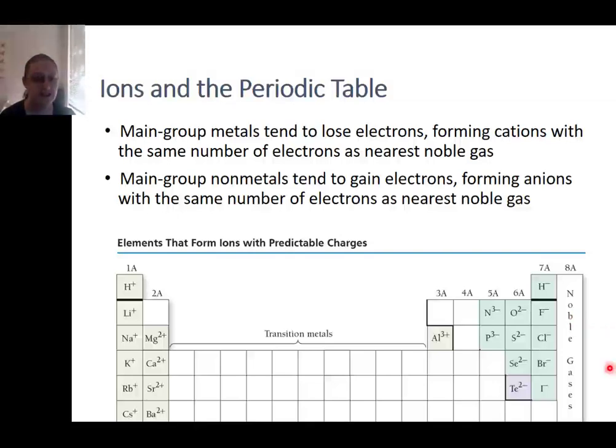On the other hand, non-metals tend to gain electrons and form anions, so that fluorine gains one electron to become like neon with 10 electrons, and oxygen, which has 8 in its neutral form, will gain 2 electrons and have a -2 charge. The elements that form predictable ions are those in the main groups of the periodic table that are highlighted in this figure.